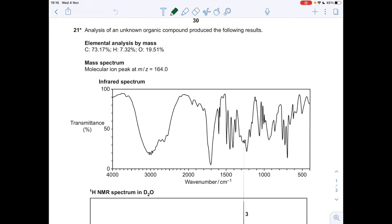Okay, so we'll start with the easy stuff, the elemental analysis by mass. That's obviously an empirical formula calculation, so just quickly knock up a table of the elements. We've got 73.17% of carbon, 7.32% hydrogen, 19.51% oxygen.